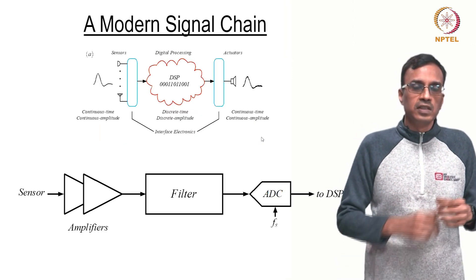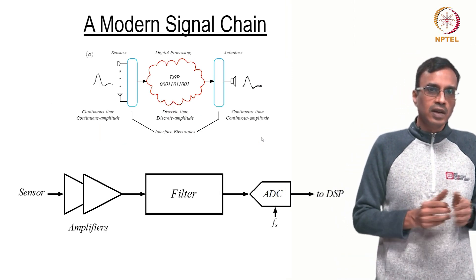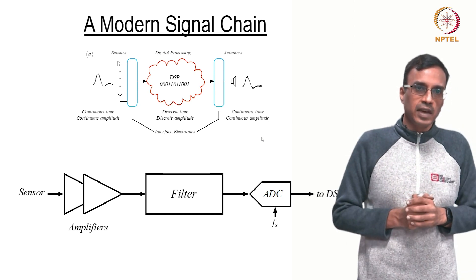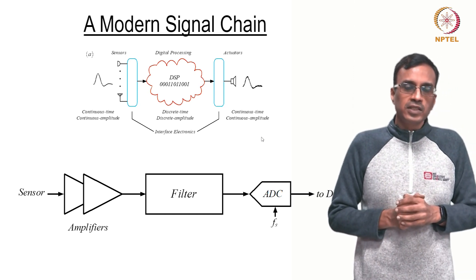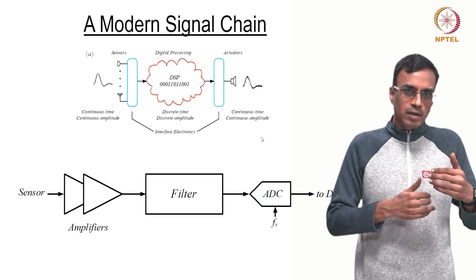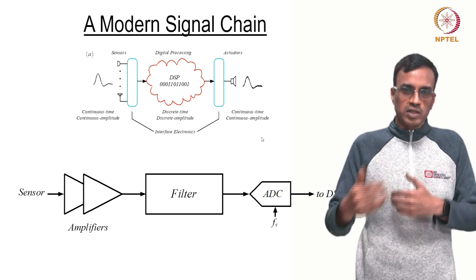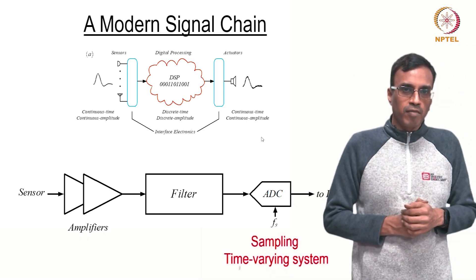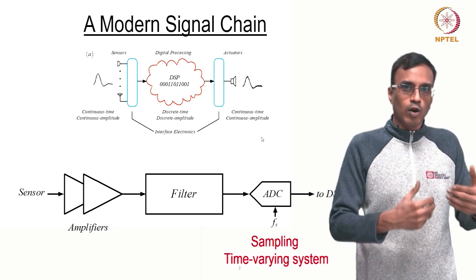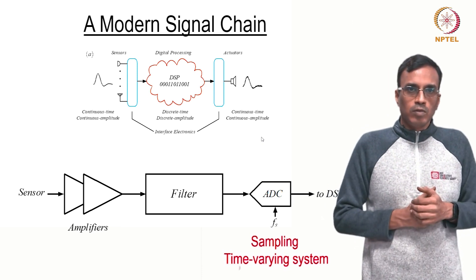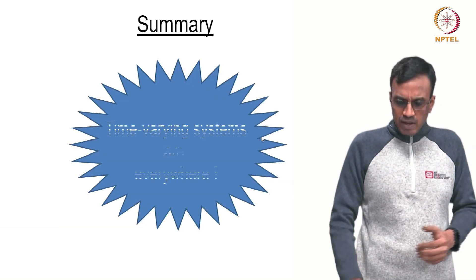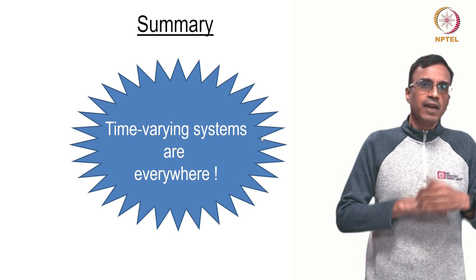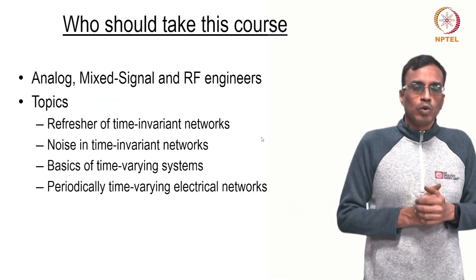The analog to digital converter that is needed at the end of the signal chain consists of sampling and quantization. Sampling is an example of a time varying operation. To summarize therefore, time varying systems are everywhere around us.